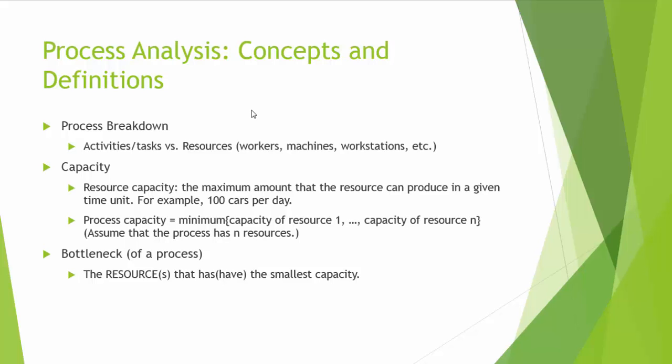Typically, a process has two major components. One is activities or tasks — those are the things we need to complete. The other one is resources. Resources can be workers, machines, workstations, etc. You may think of it this way: activities and tasks are the demand, and resources are the supply.